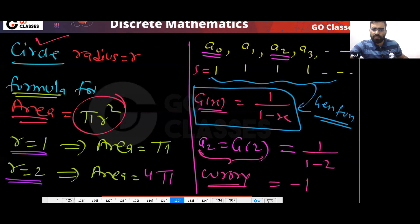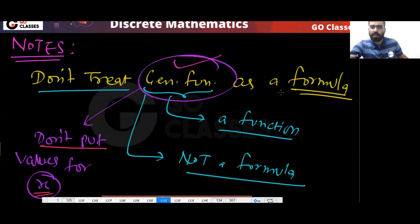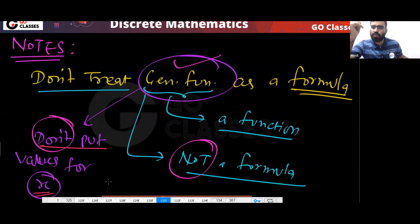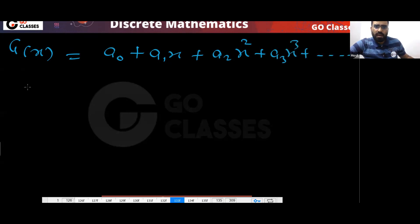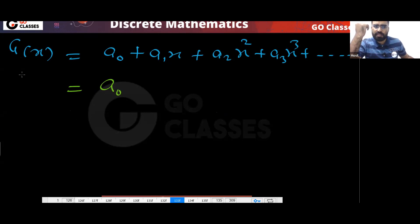Don't treat the generative function like a normal formula where you substitute values of x. We don't put values of x in the generative function. Now let me tell you when you can put a value for x. The generative function G(x) equals a₀ + a₁x + a₂x² + a₃x³ and so on.